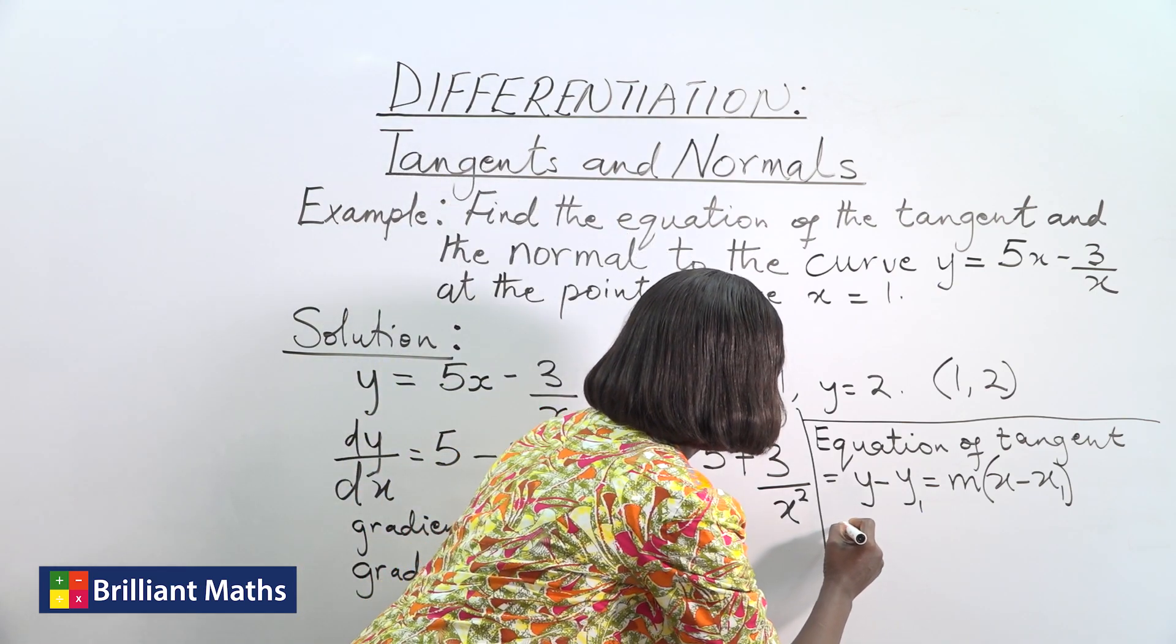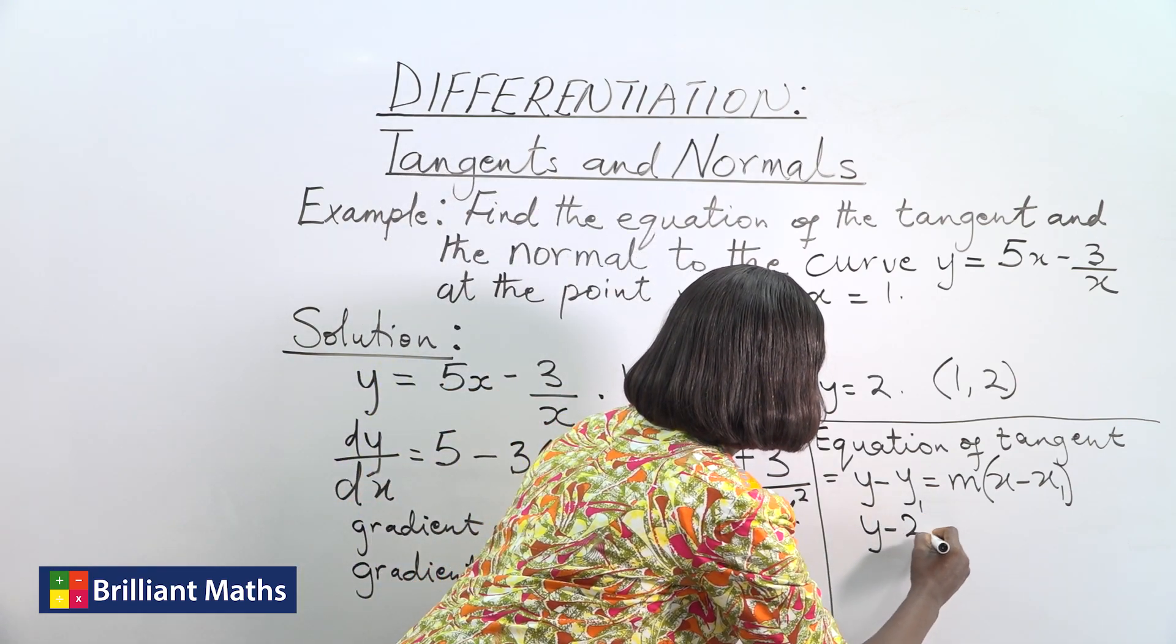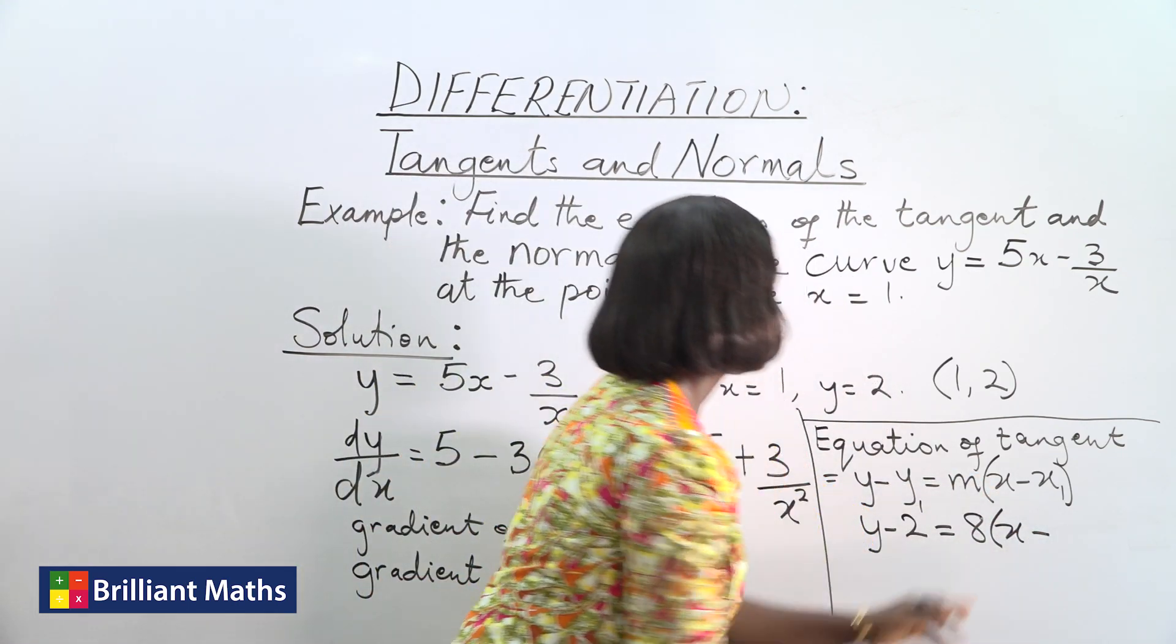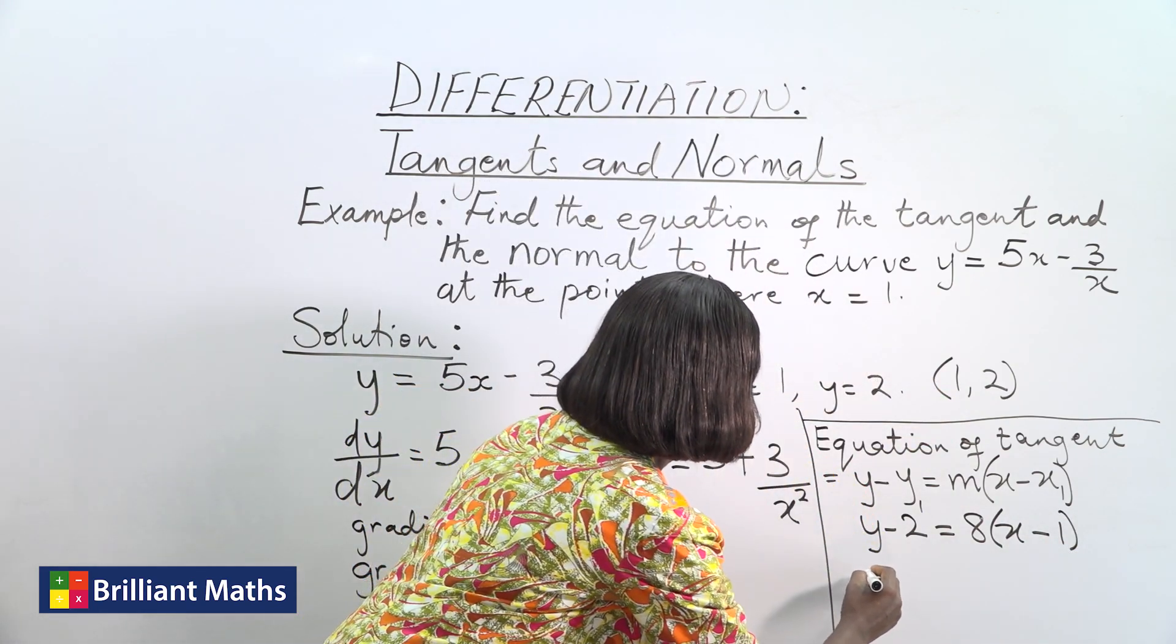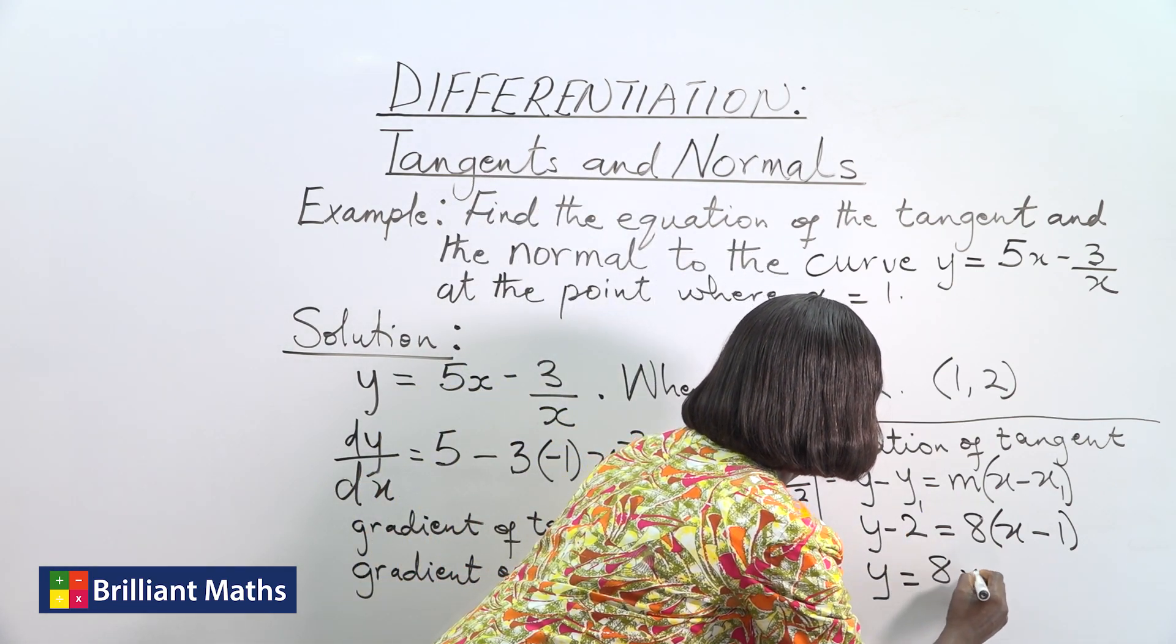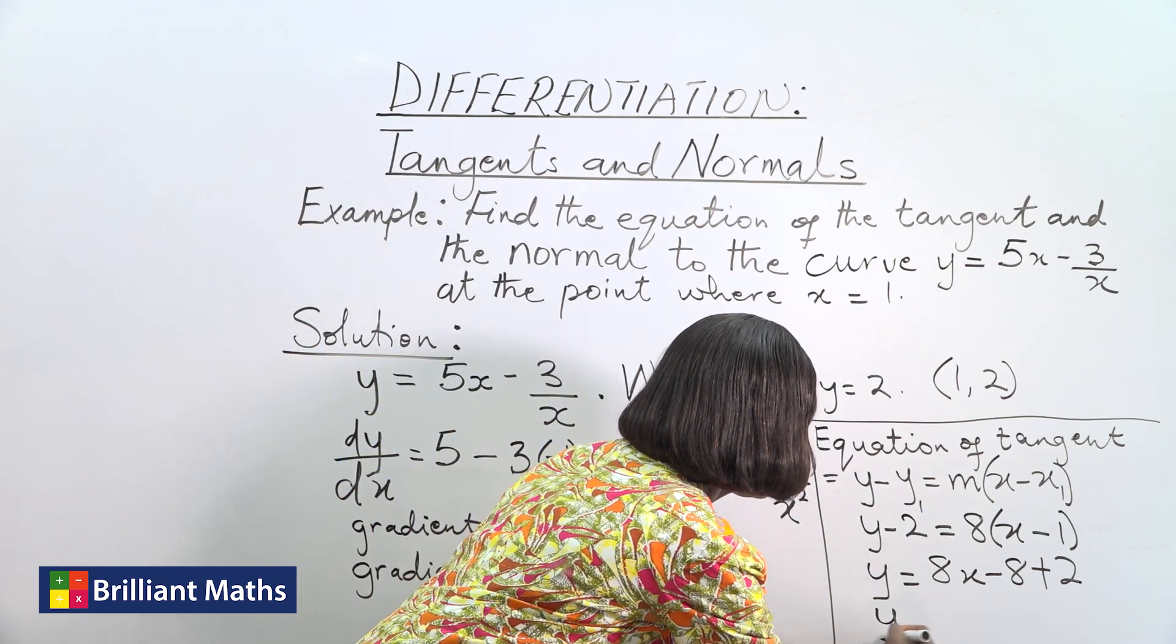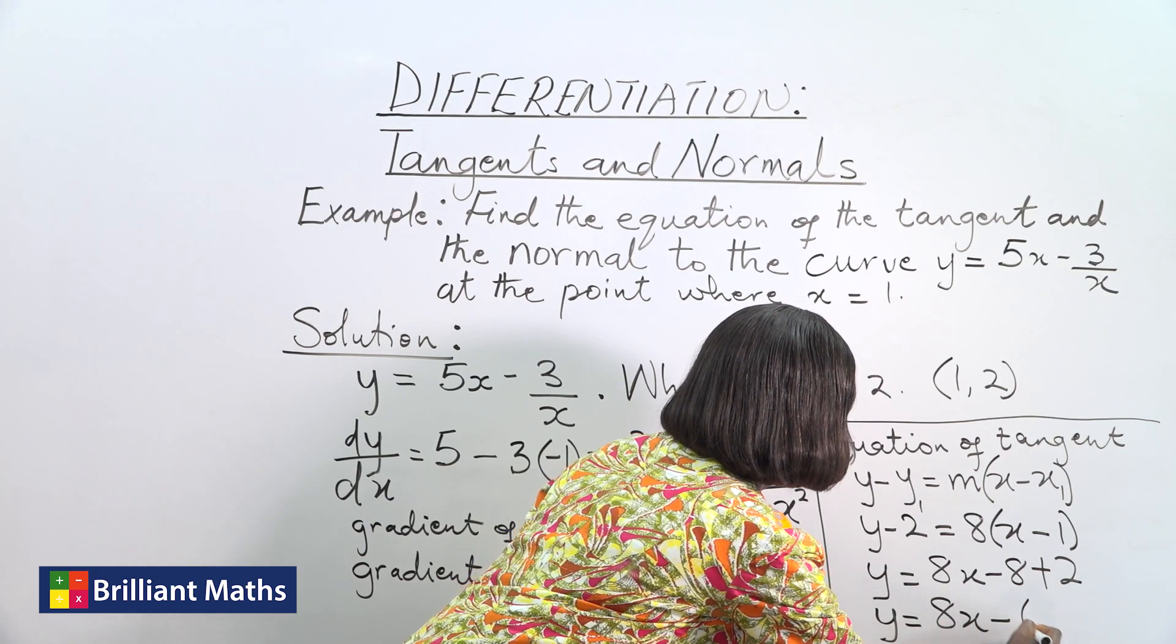And we get our equation to be y - 2 = 8(x - 1). Then our equation will be y = 8x - 8 + 2. So the equation of the tangent will be y = 8x - 6.